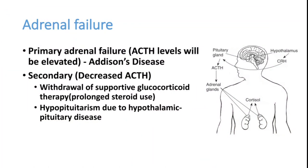Welcome to ATCM, the emergency medicine channel. Today we are discussing adrenal failure or adrenal insufficiency. The adrenal gland is situated in the abdomen as a suprarenal gland and produces mainly cortisol, which maintains blood pressure. This is controlled by a mechanism originating from the hypothalamus, which releases CRH that stimulates the pituitary gland to produce adrenocorticotropic hormone (ACTH), which in turn stimulates the adrenal gland to produce cortisol.